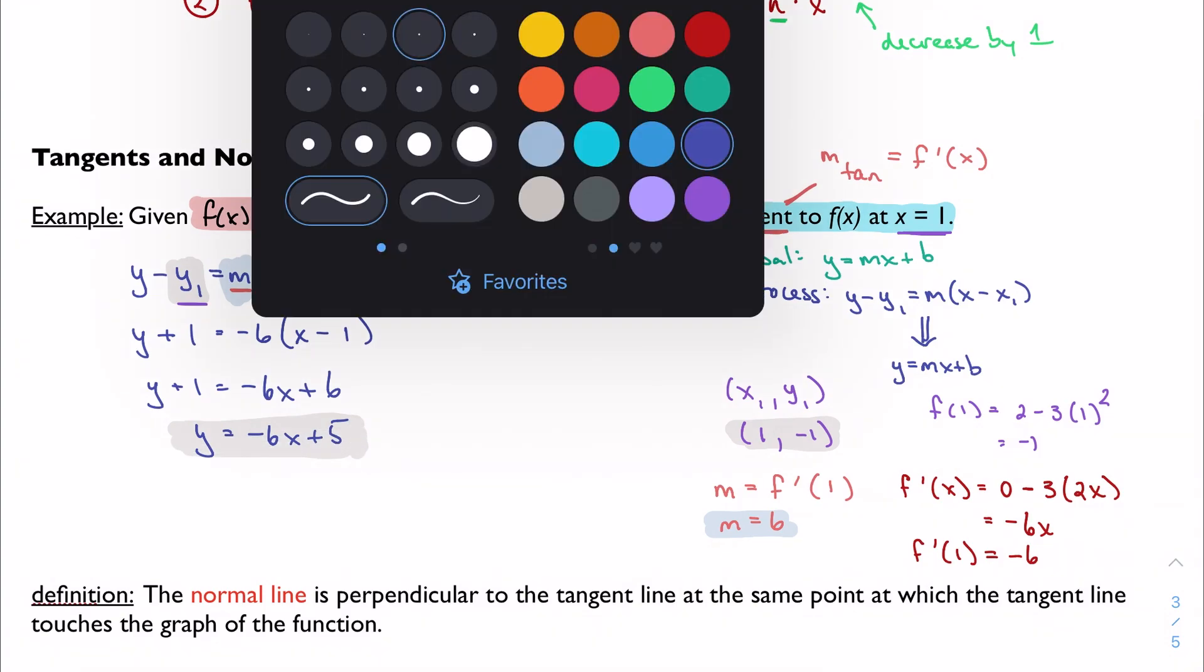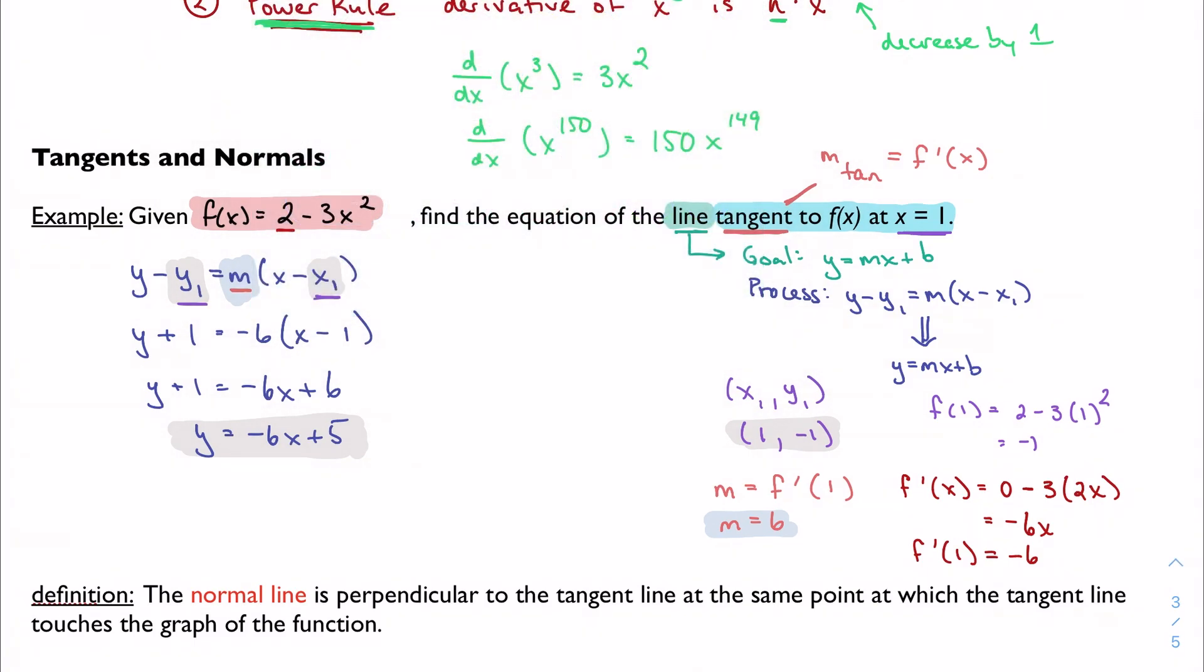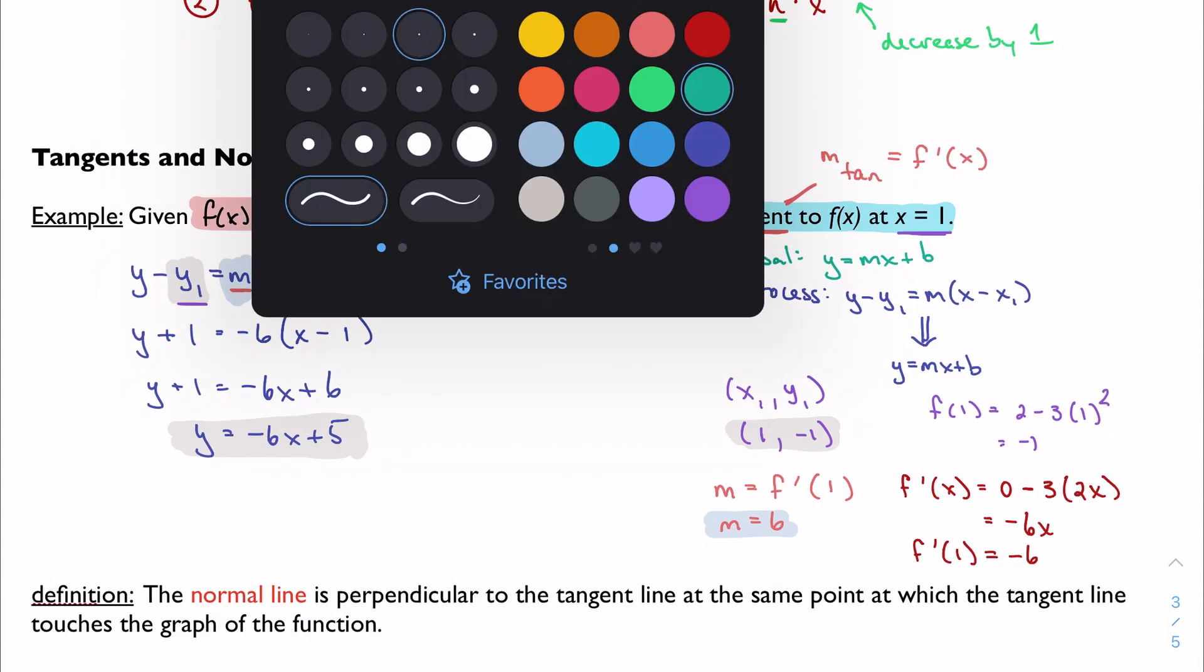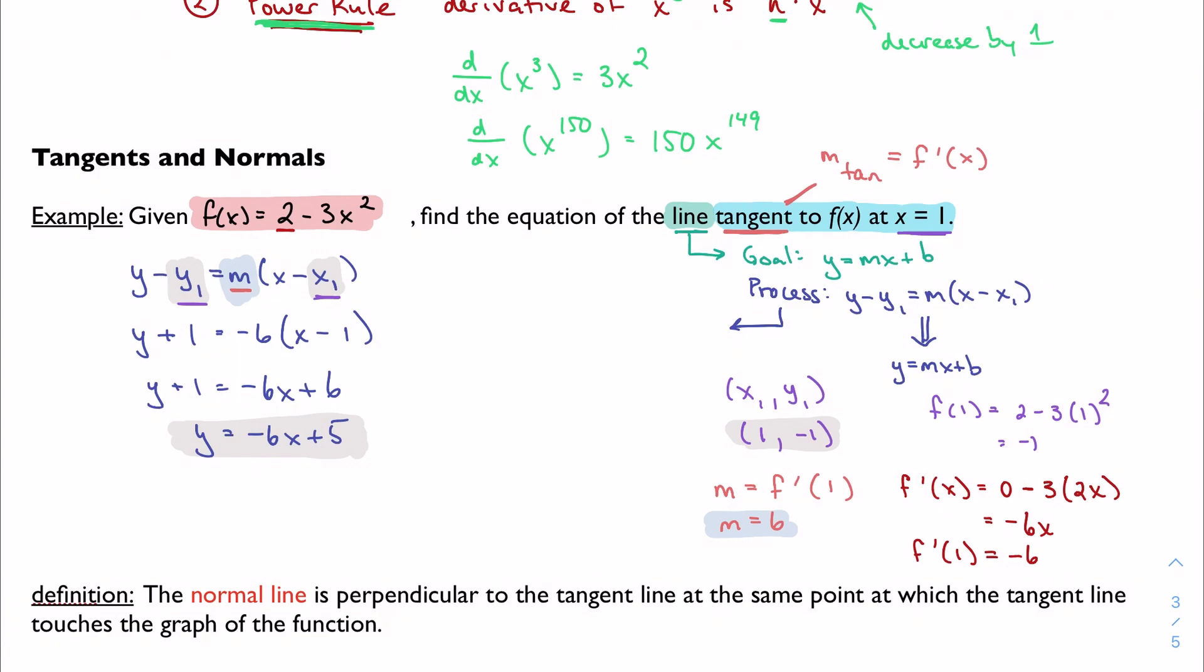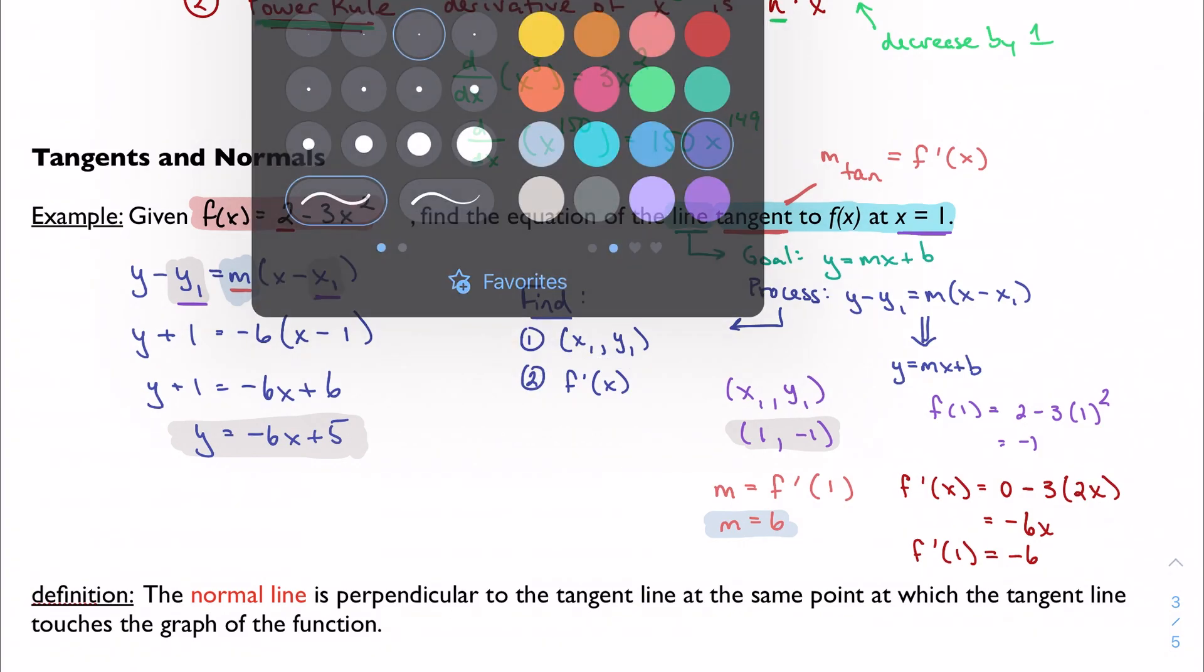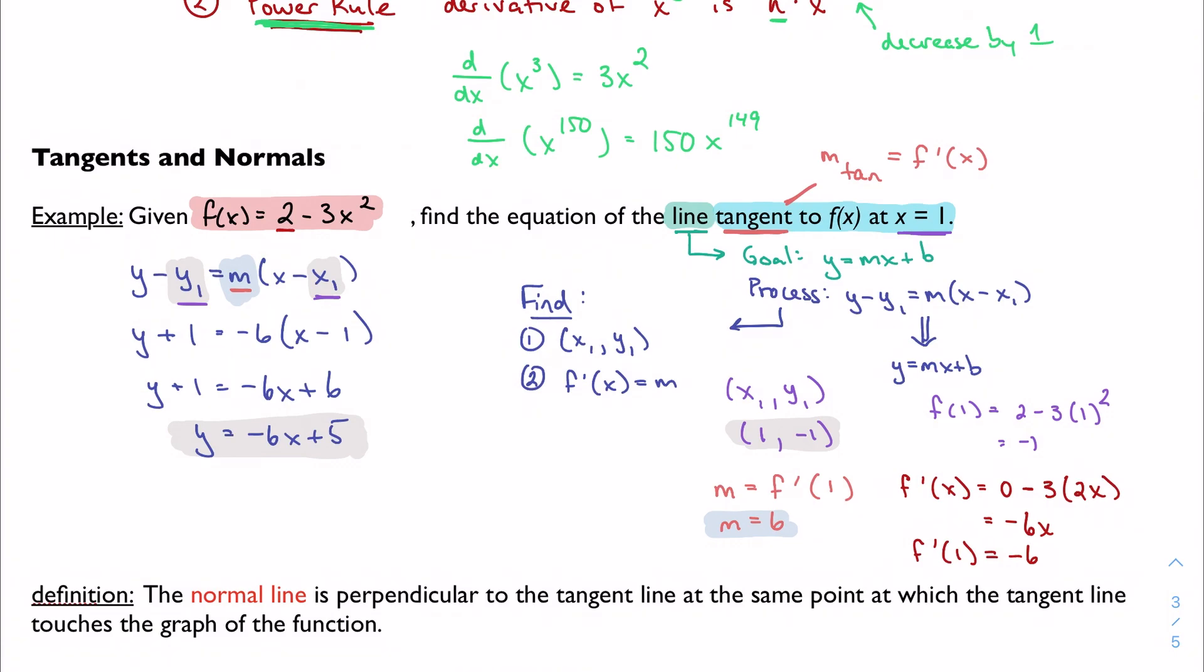So a couple key things here. You always want to find, so in addition to your goal here, your process is there. But along the way in your process that I want to maybe elaborate on, you have kind of a checklist. Part of your process is finding the point and the slope. To find the point, we took the x value we were given. We plugged it into the function that gave us x1 and y1. To find f prime of x, that's your slope. That's going to give you your slope. So how did I do that? I took the derivative of the function, which is right here. We're going to learn some tricks to do this with more complex functions throughout the chapter. I find the derivative of the function, and again, I plug in that x value I'm given.